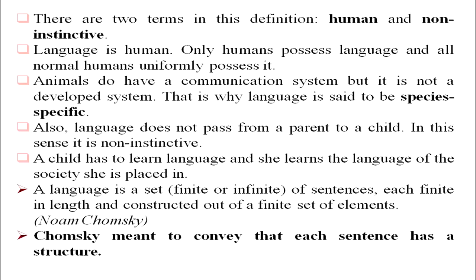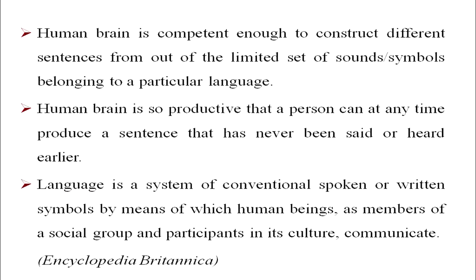A child must learn the language of the society she is placed in. If the child does not hear a language, she will not learn it. The human brain can construct different sentences from a limited set of sounds and can produce a sentence never said or heard before. According to the Encyclopedia Britannica, language is a system of conventional spoken or written symbols by which human beings as members of a social group communicate.